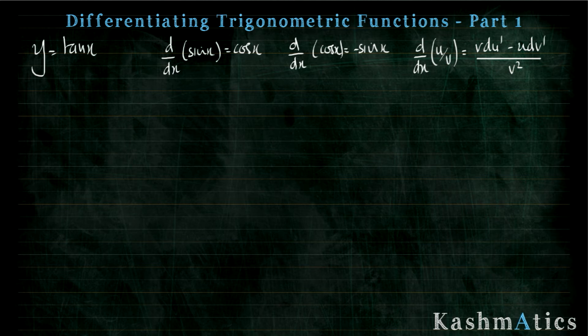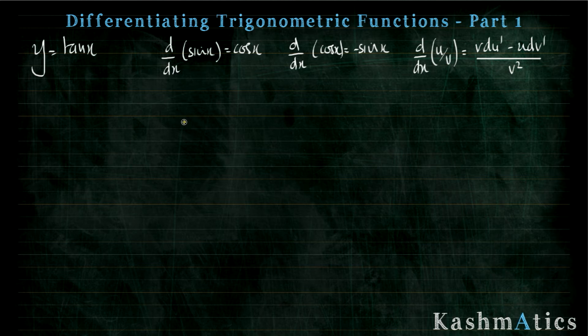Let's move on to y equals tan x. At the top I've got a few things which are going to be useful: the derivative of sine x is cos x which we just learned, the derivative of cos x is minus sine x which you just did, and on the right I've got the quotient rule — d by dx of u over v equals (v du minus u dv) over v squared. I'm going to show you how to differentiate y equals tan x using the quotient rule.